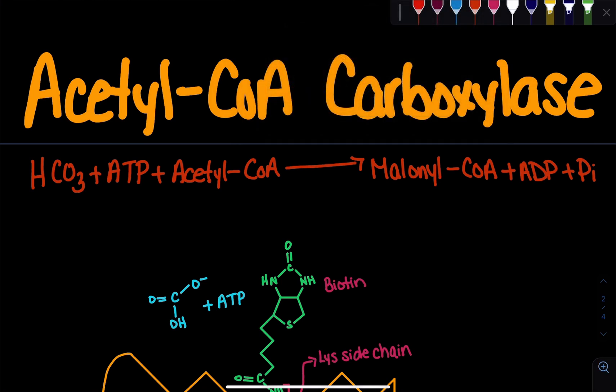Now, let's look at the net reaction first. We have bicarbonate, ATP, and acetyl-CoA, and we're going to produce malonyl-CoA and lose ADP plus Pi.